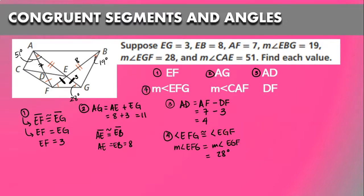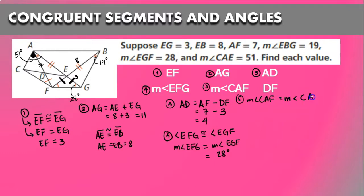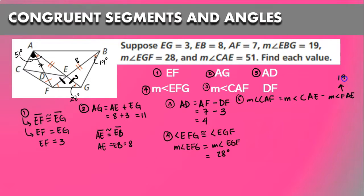What about angle CAF? The measurement of angle CAF equals the measurement of angle CAE minus the measurement of angle FAE. Because angle FAE is congruent to angle EBG, angle FAE is 19 degrees. So angle CAF equals 51 degrees minus 19 degrees, which is 32 degrees.